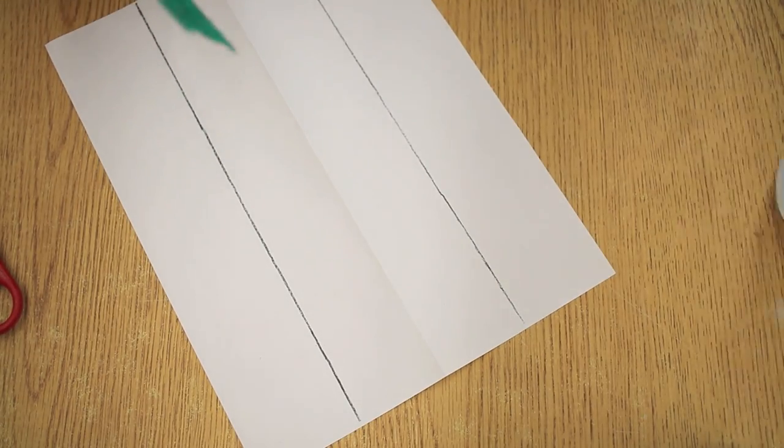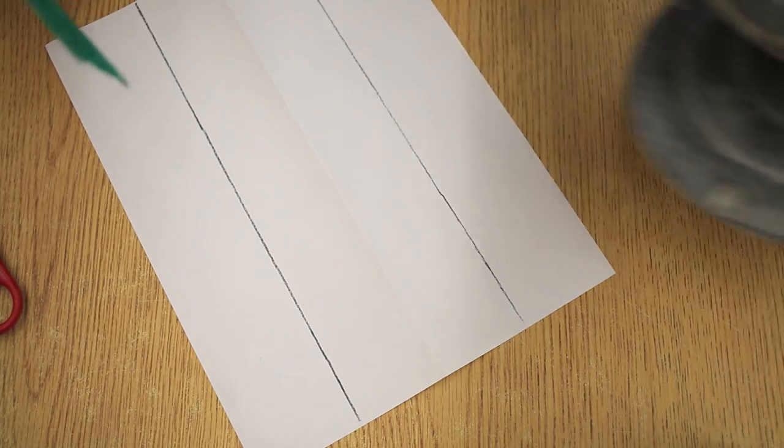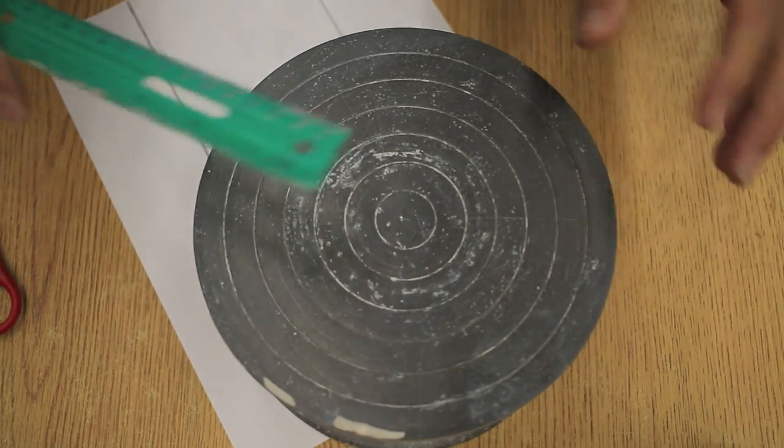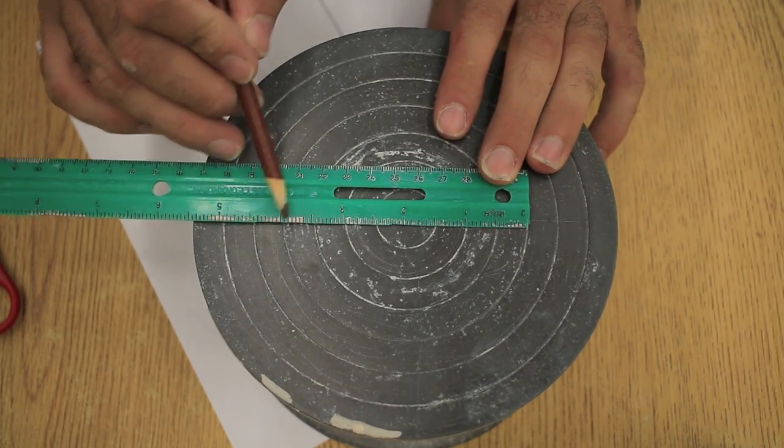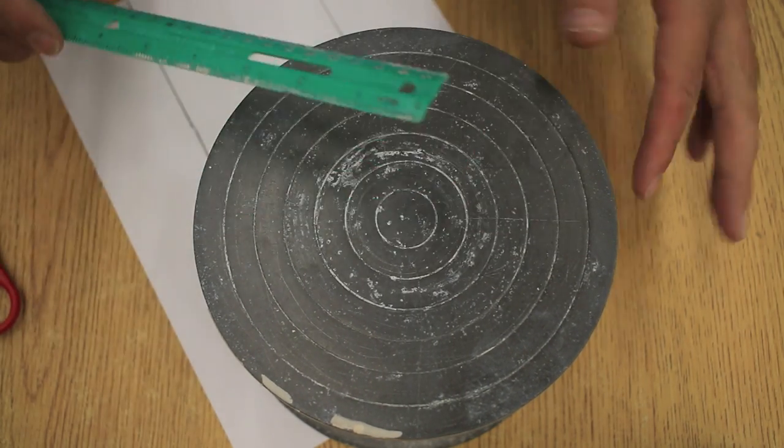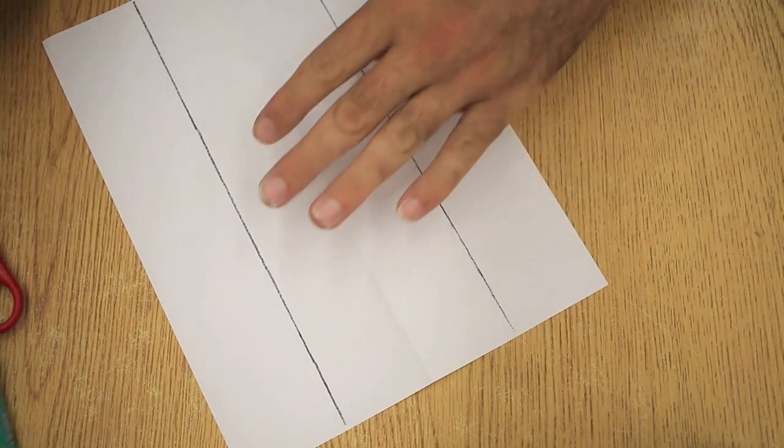The reason we're doing that is so we can have a nice stable base to build our pot. It also happens to correspond exactly with the line here. You see there's exactly four inches between these two lines on the banding wheel. That'll help you recenter your pot the next class.